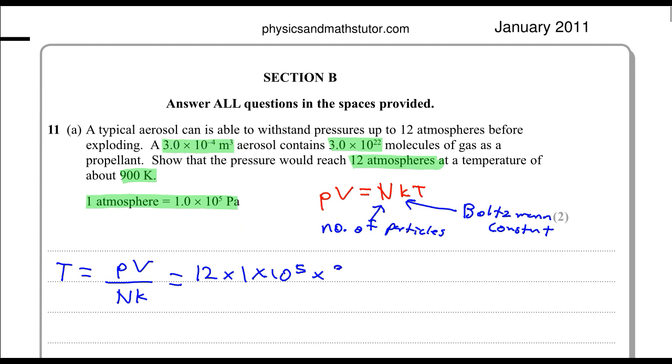And then we need the volume, which is 3 times 10 to the minus 4, all divided by N, the number of molecules in this case, 3 times 10 to the 22, and K, Boltzmann constant, is 1.38 times 10 to the minus 23, which is a constant provided in the formula sheet. And these numbers would give 869.6 K, which is about 900 K.